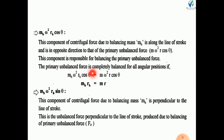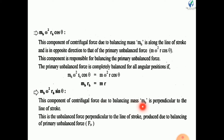The primary unbalanced force is completely balanced for all angular positions if MB·ω²·RB·cos θ equals m·ω²·R·cos θ. Since ω² and cos θ are common terms, we obtain MB·RB = m·R. So if we place MB mass at radius RB such that MB·RB = m·R, we can completely balance the primary unbalanced force. The other component, MB·ω²·RB·sin θ, is perpendicular to the line of stroke and is the unbalanced force produced due to the balancing of the primary unbalanced force.